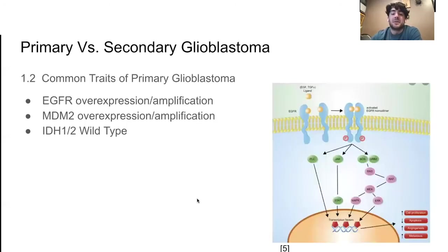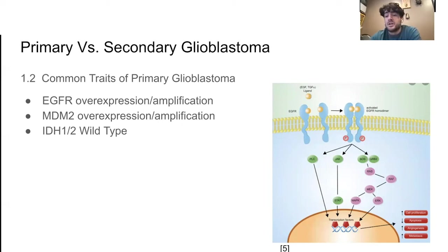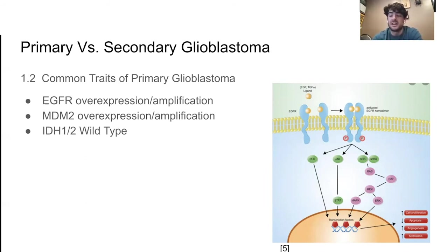Not much is known about the mechanism of development for primary glioblastomas, but they share a few common traits. The first is EGFR overexpression or amplification. EGFR is the epidermal growth factor receptor responsible for activating downstream signal transduction that controls proliferation and cell differentiation. While its precise role in primary glioblastoma development is unclear, it is associated with many malignant gliomas such as glioblastoma.